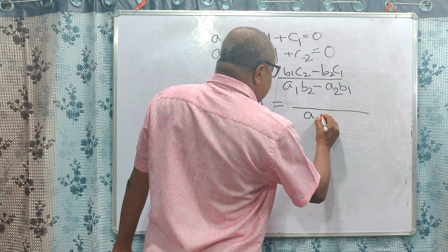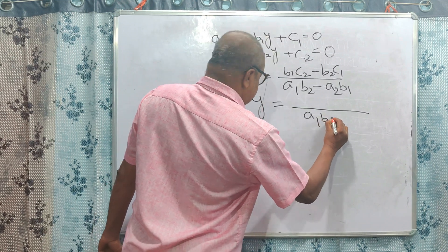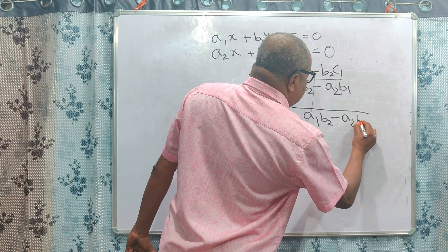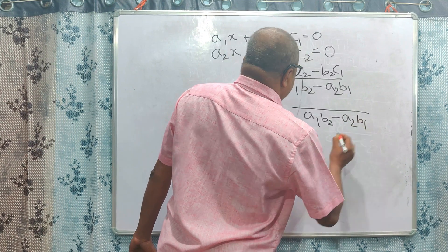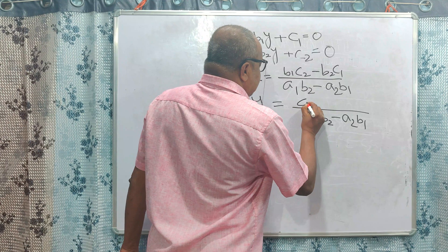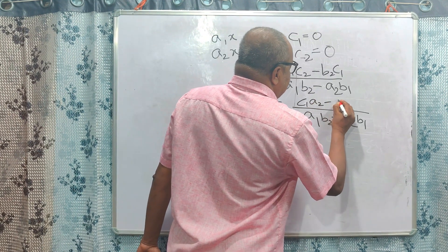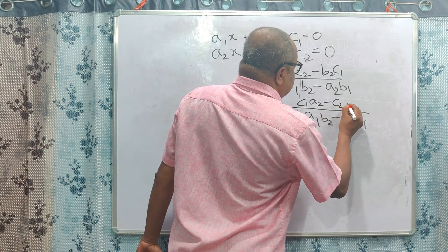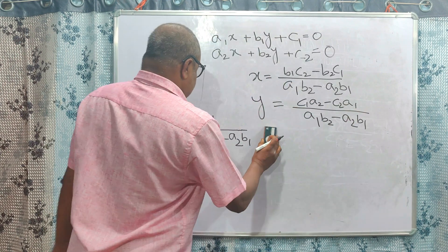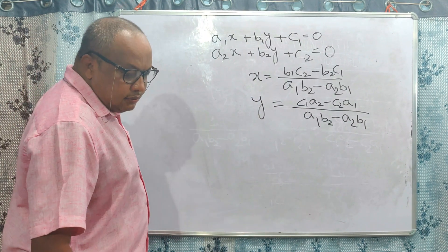X divided by A1 B2 minus A2 B1. In the numerator expression for y: C1 A2 minus C2 A1. This is the complete solution formula using the cross-multiplication method.